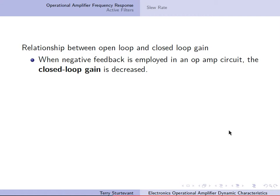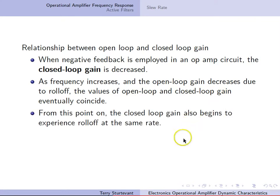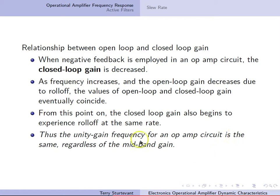When negative feedback in an op-amp circuit is employed, the closed-loop gain is decreased. As the frequency increases and the open-loop gain decreases due to roll-off, the values of the open-loop and closed-loop gain eventually coincide. From this point on, the closed-loop gain also begins to experience roll-off at the same rate. The closed-loop gain can never be greater than the open-loop gain. Thus, the unity gain frequency for an op-amp circuit is the same regardless of the mid-band gain.